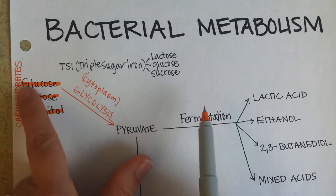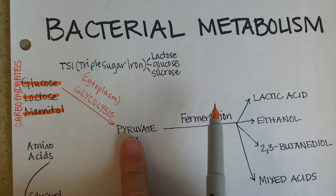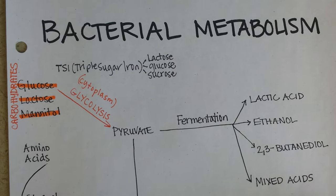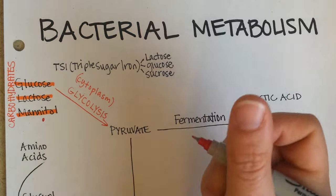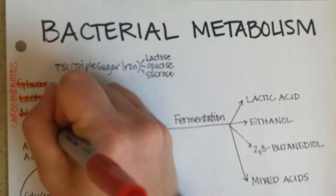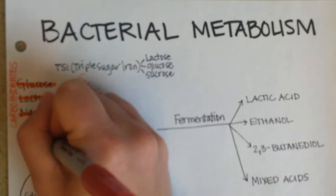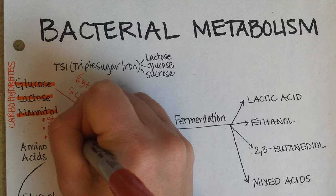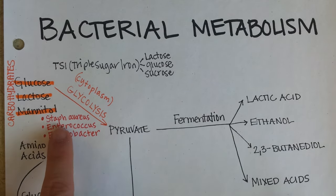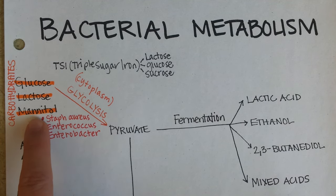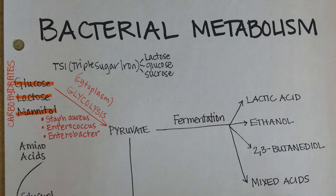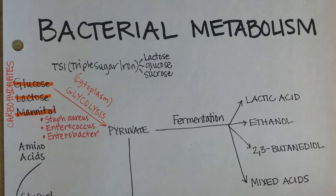The process of glycolysis is converting glucose, lactose, mannitol, and a variety of other sugars to pyruvate. Mannitol is special in that only a few medically significant bacteria can convert it to pyruvate — Staph aureus, Enterococcus, and Enterobacter. There's a test called the MSA, or mannitol salt agar test, and these three genera can ferment mannitol to make ATP, turning the petri plate yellow — a positive result important for bacterial identification.